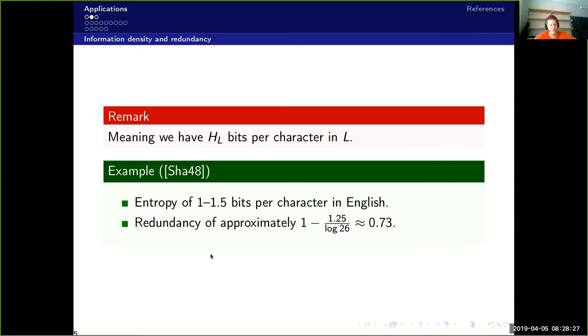So we have redundancy in languages and then this will represent the redundancy in language. As I said, H of L is the bits per character in the language. So Shannon did some estimates for himself back in 1948 in his paper, and then he estimated that the entropy of English is one to one and a half bits per character. So if we assume then somewhere in between, so 1.25, and then the redundancy in English is approximately one minus 1.25 divided by the logarithm of 26, which is roughly 0.73. So quite a lot of redundancy in English.